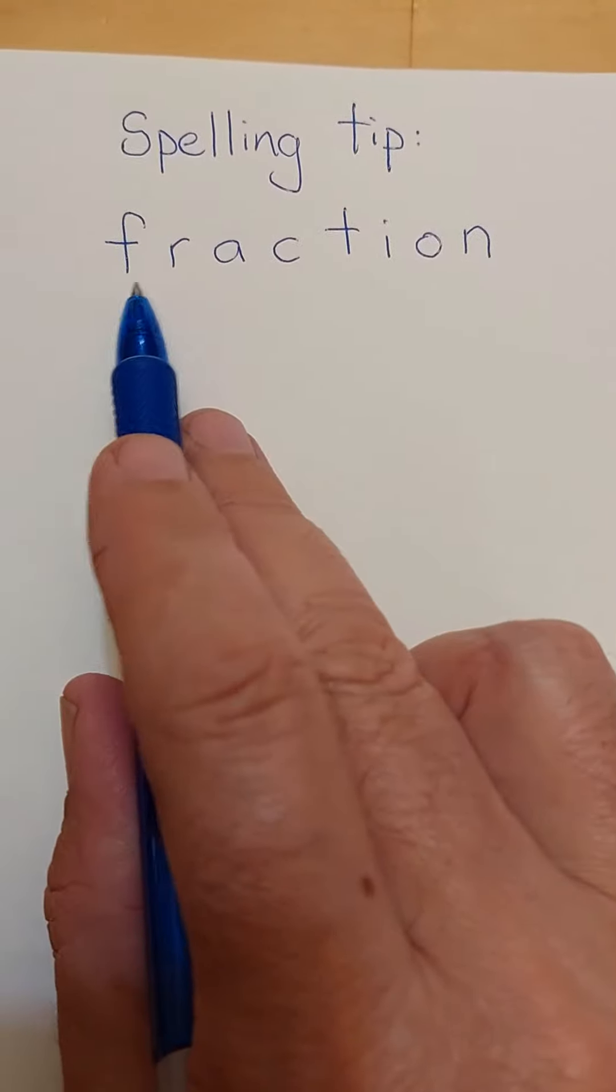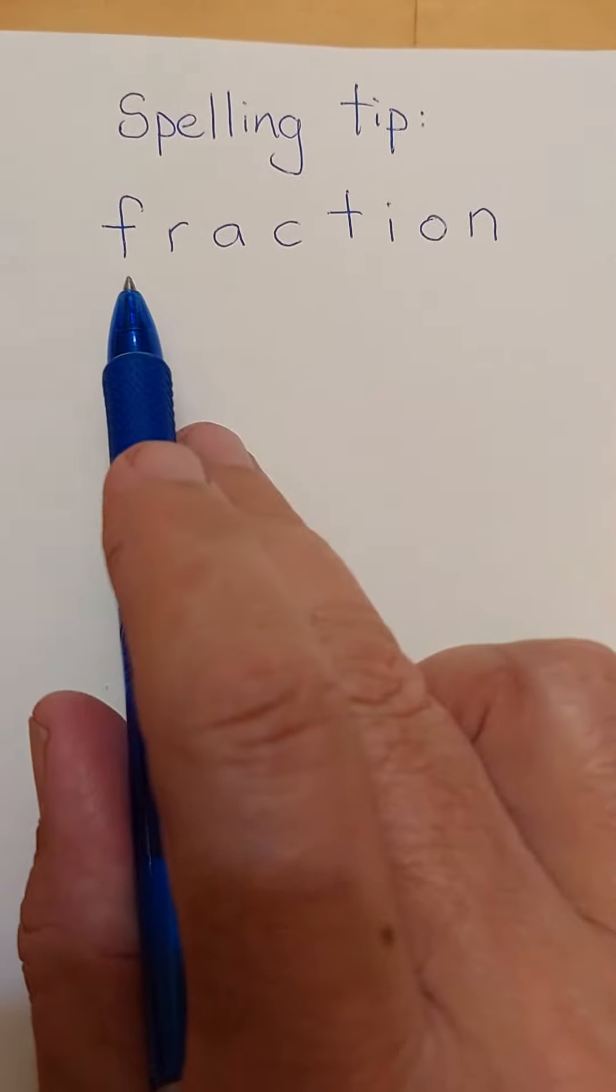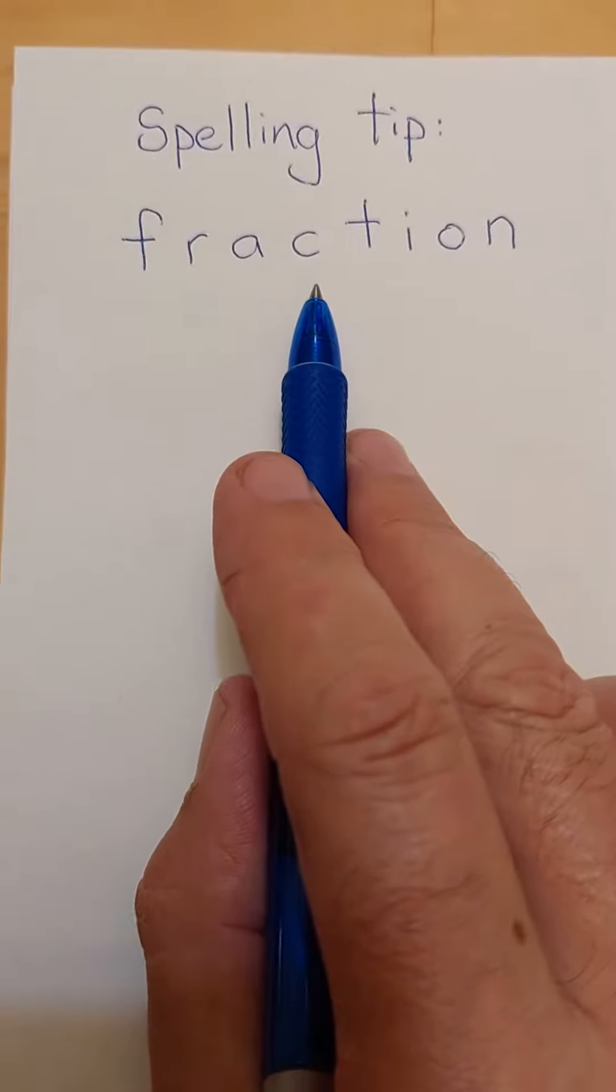First of all, write the word out clearly on a piece of paper, then sound it out, make sure everyone can read it.